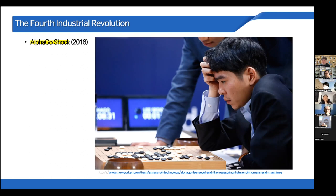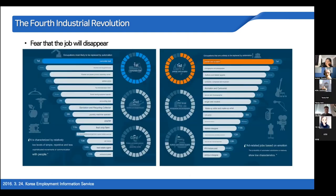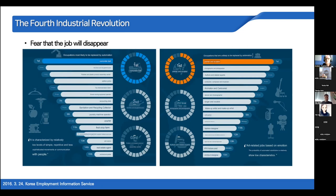Because of the AlphaGo Shock, we came to regard AI as more effective and very important for human beings. In the same year, 2016, the Korea Employment Information Service announced fears about jobs disappearing. I translated the Korean picture using Google Translate. It shows jobs not unlikely to be replaced by automation — like painter, sculptor, photographer, or musician.